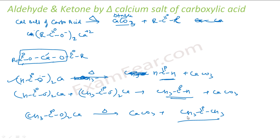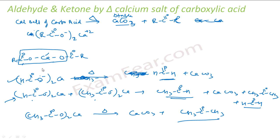If you take a combination of the calcium salt of methanoic acid and the calcium salt of a non-methanoic acid, you get three products: an aldehyde, a ketone, and a mixed product. What is important is: given the reactant, you should be able to take out CaCO₃ and form the product, because CaCO₃ is a very, very stable compound.